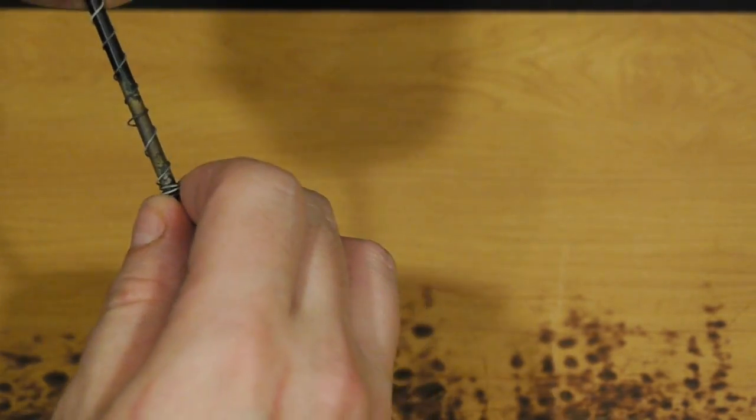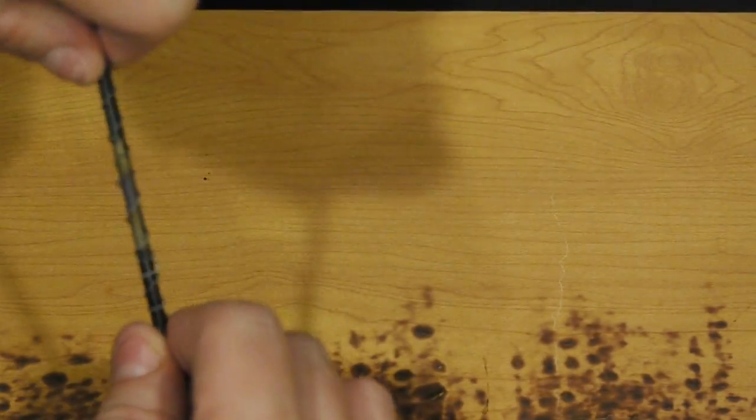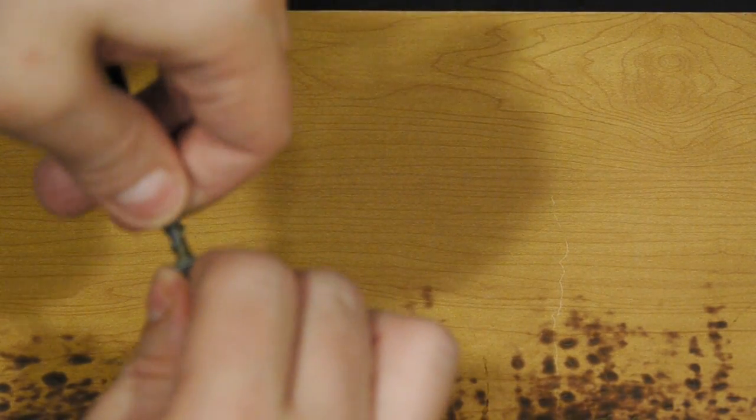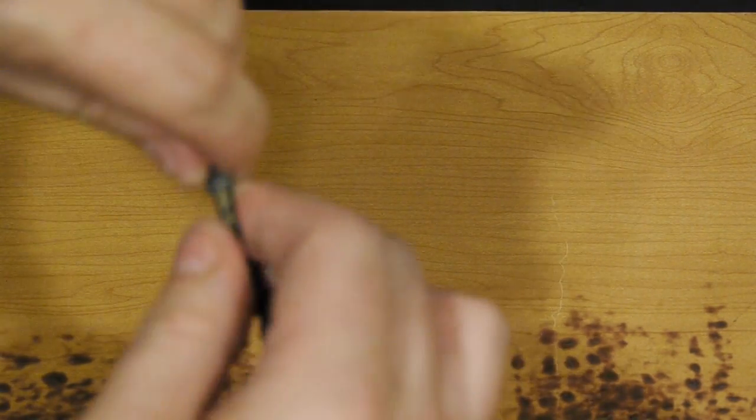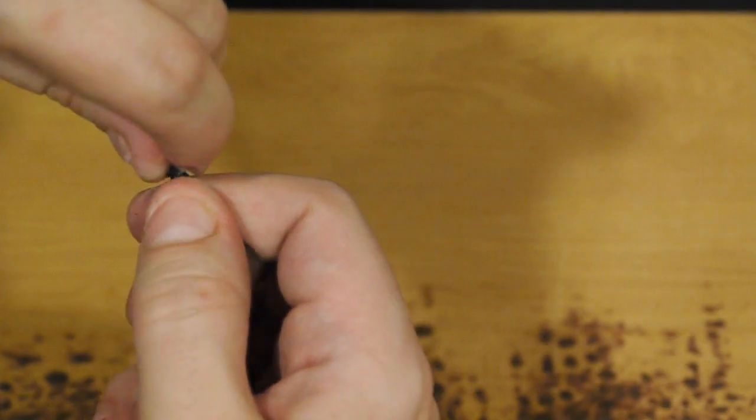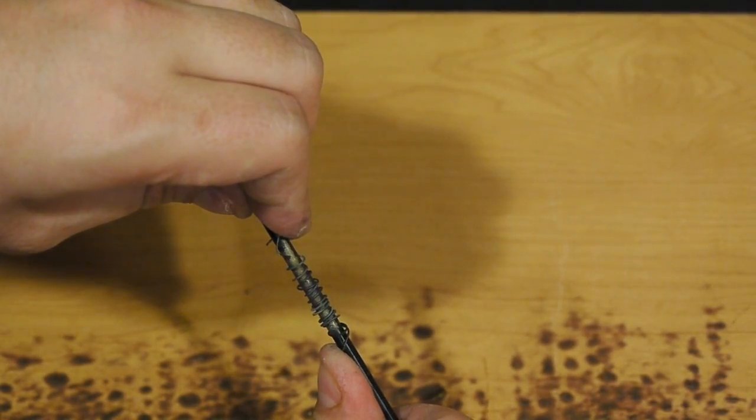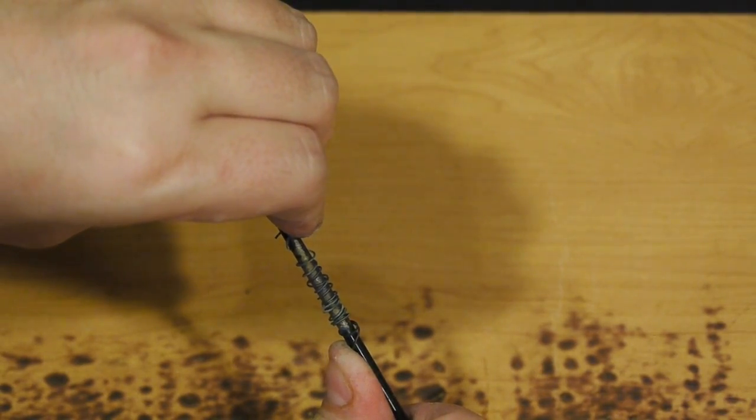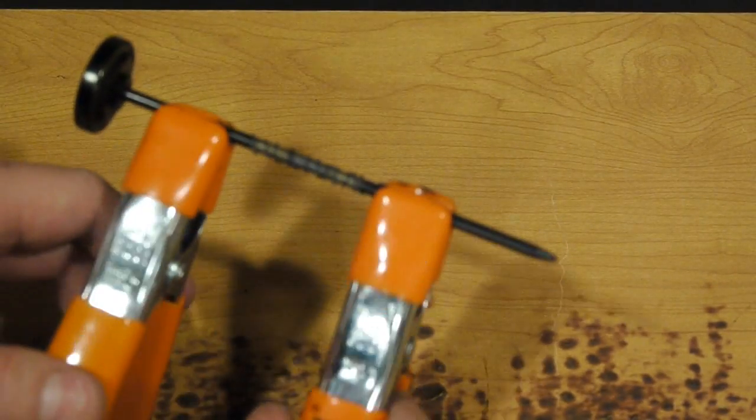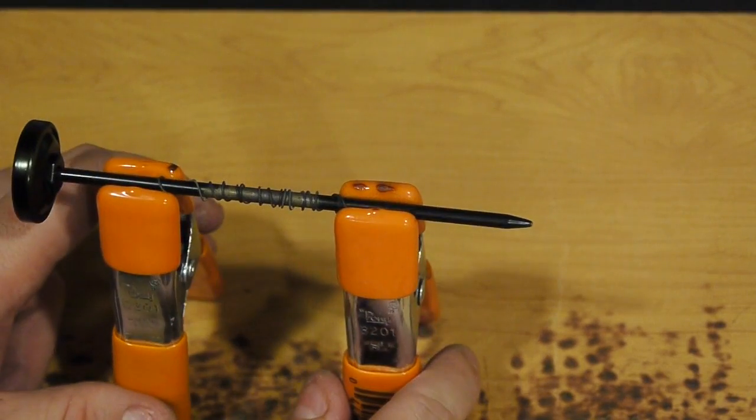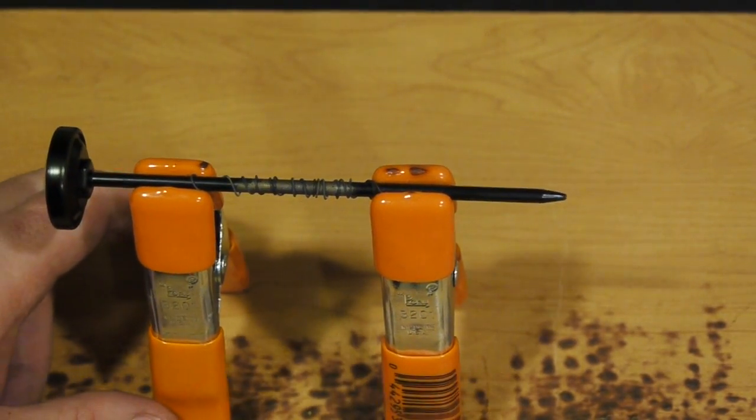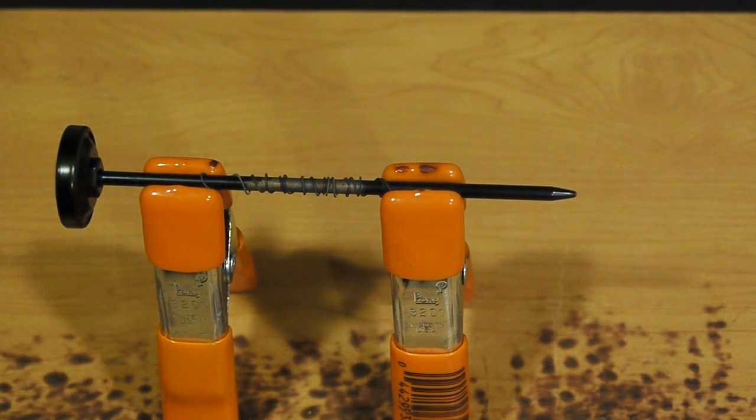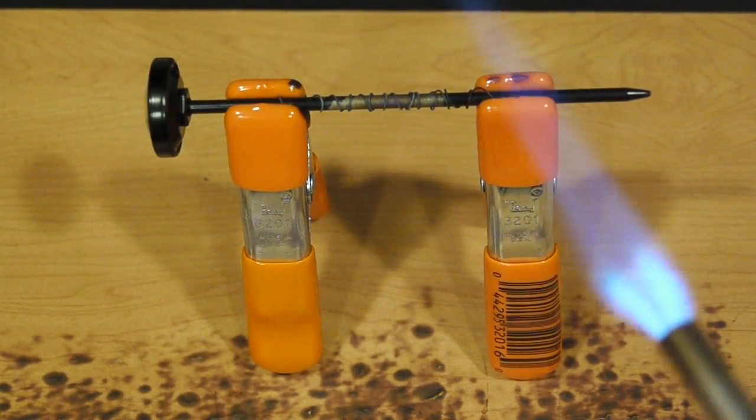This is going to take a lot of wrapping actually. Alright, there we go, we're getting somewhere. Okay, once I've got it in place, I'm going to clamp it down again. And break out the handy dandy blowtorch and cook it into place.